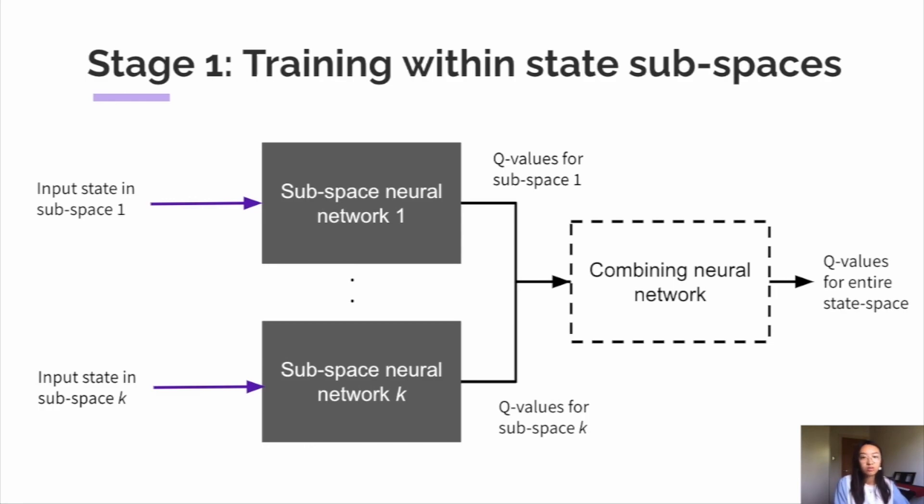So for k number of state subspaces, we train k neural networks at the same time, each learning from transitions in their respective subspaces. And the combining neural network is not trained or used at this point.